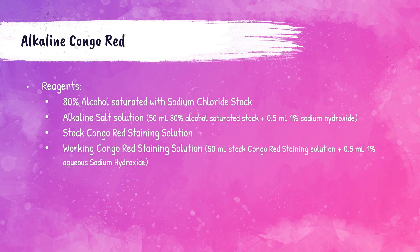The reagents required for the alkaline Congo red method are: 80% alcohol saturated with sodium chloride stock; alkaline salt solution, prepared by combining 50 milliliters of 80% alcohol saturated stock with 0.5 milliliters of 1% sodium hydroxide; stock Congo red staining solution; and working Congo red staining solution, prepared by combining 50 milliliters of stock Congo red staining solution with 0.5 milliliters of 1% aqueous sodium hydroxide.